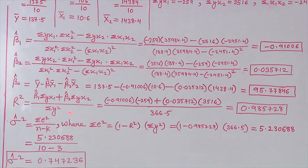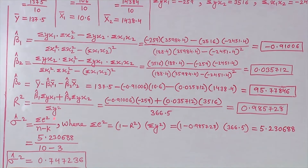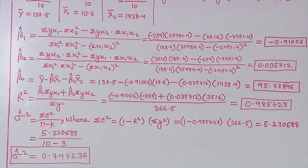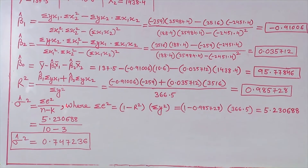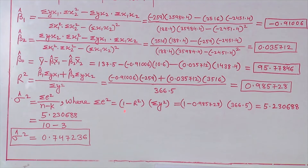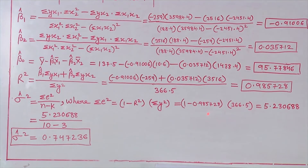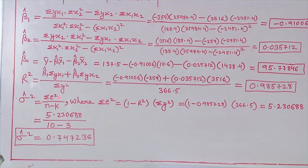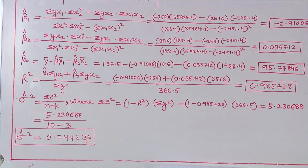With the value of R², we may calculate σ̂². The σ̂² = σe² / (n − k). Here, n is the number of observations — in our example n = 10 — and k is the number of parameters, which is 3. σe² can be calculated using the formula (1 − R²)·σy² = (1 − 0.985728) × 366.5 = 5.230688. By taking the ratio of σe² and (n − k), we get σ̂² = 0.747236.